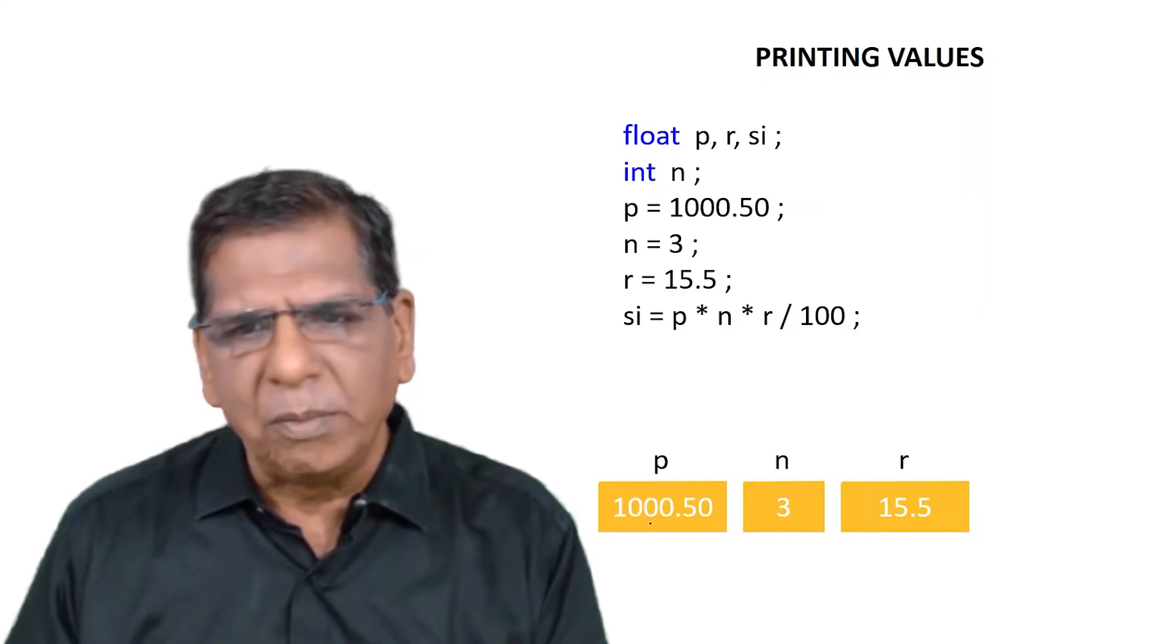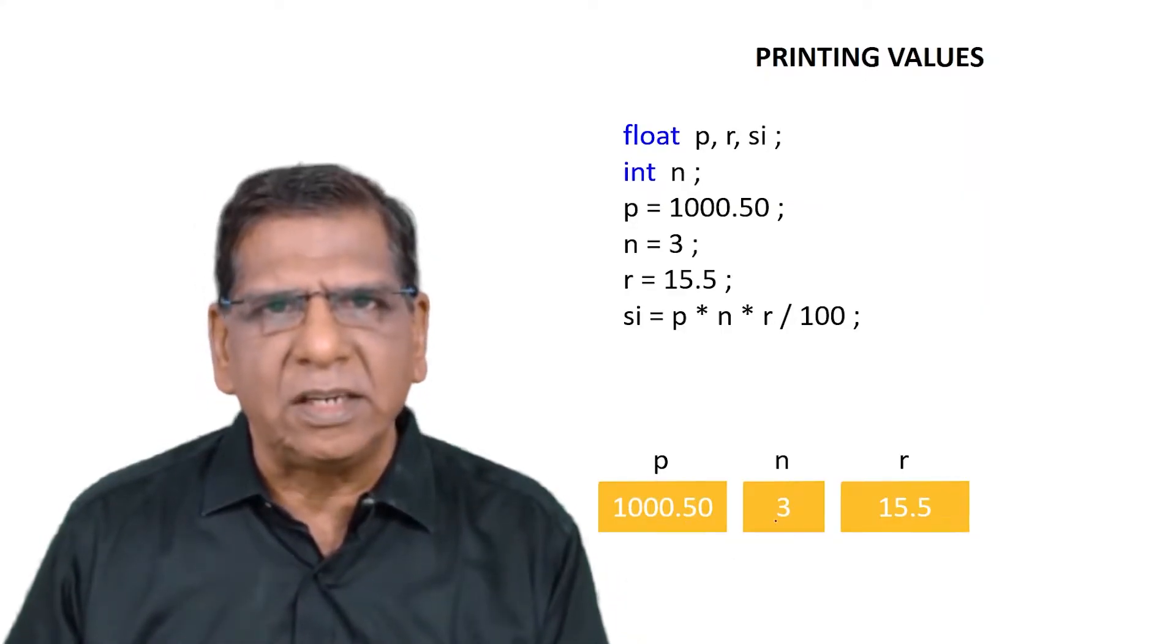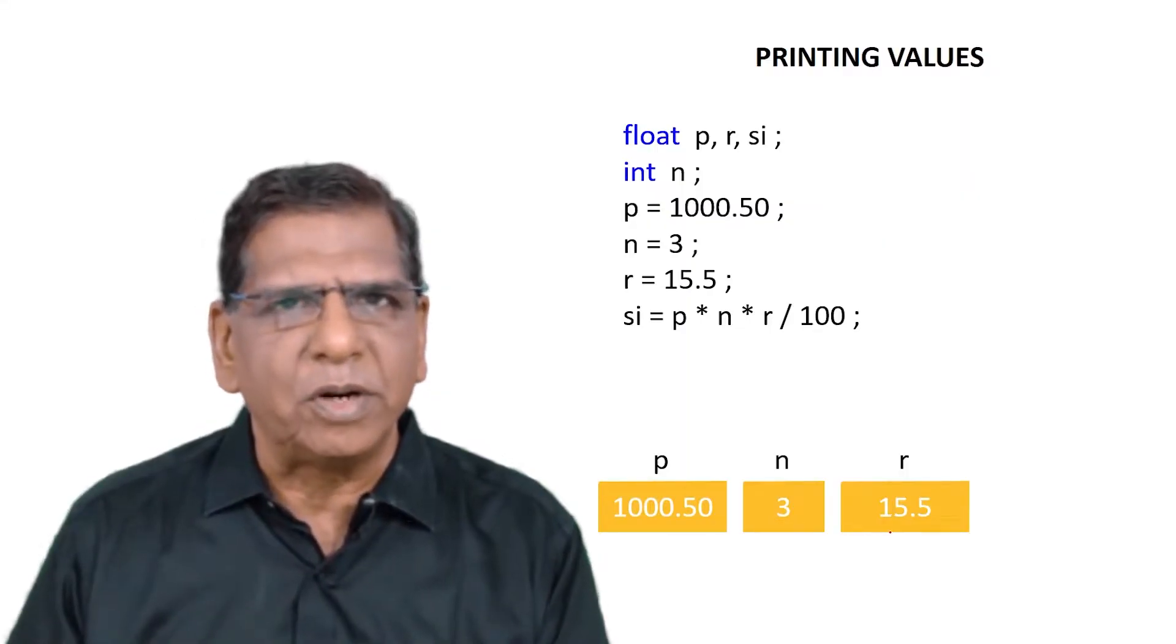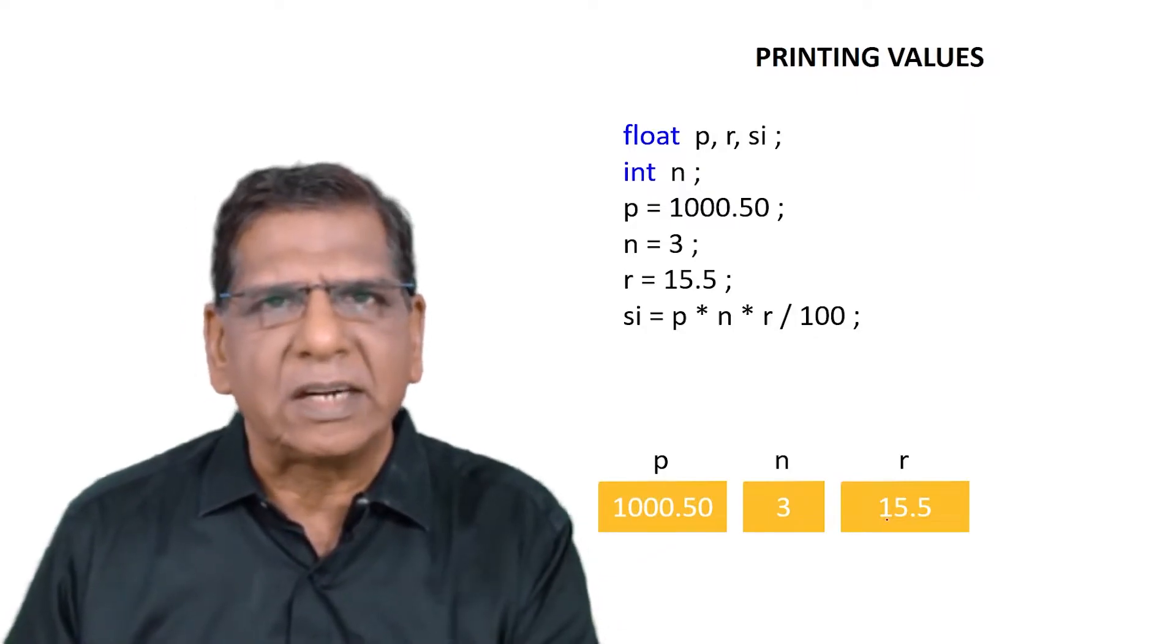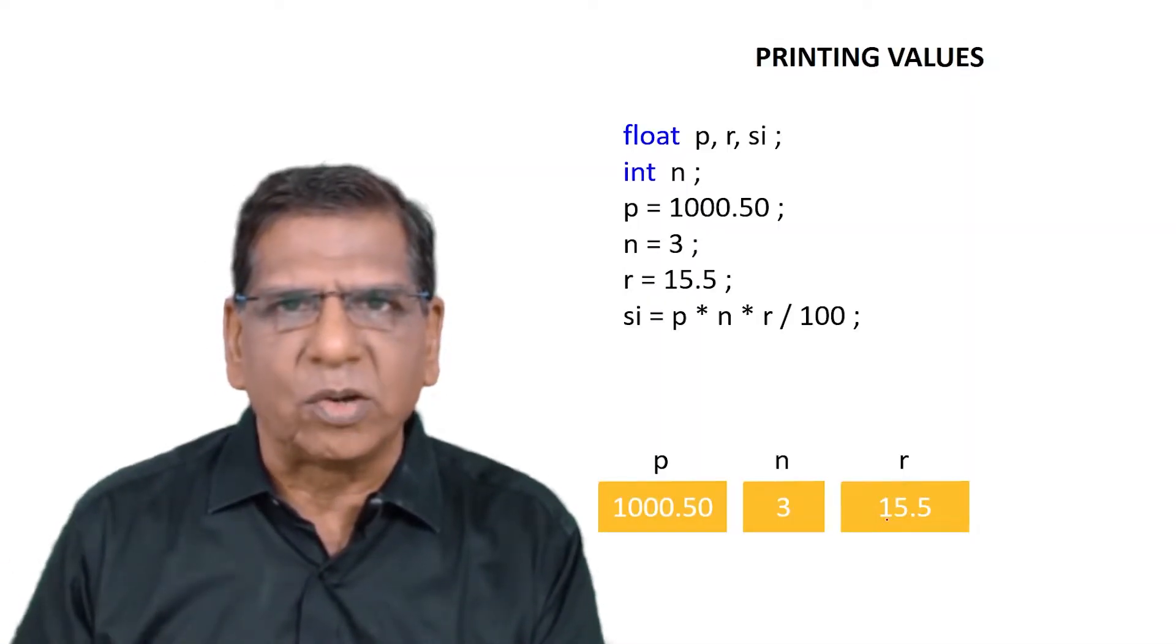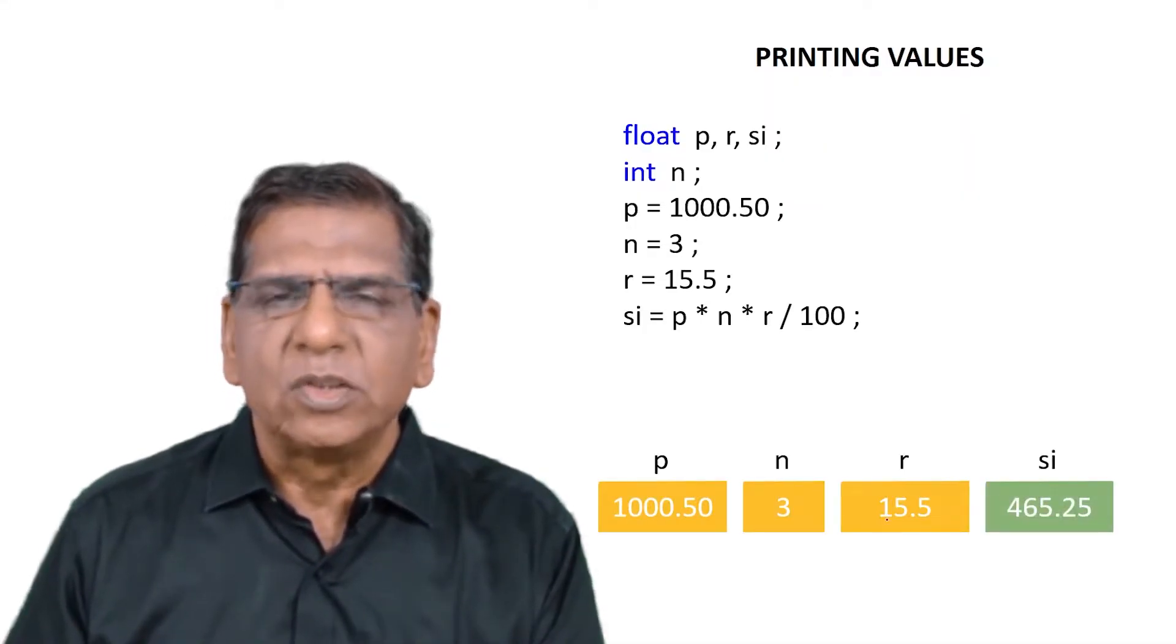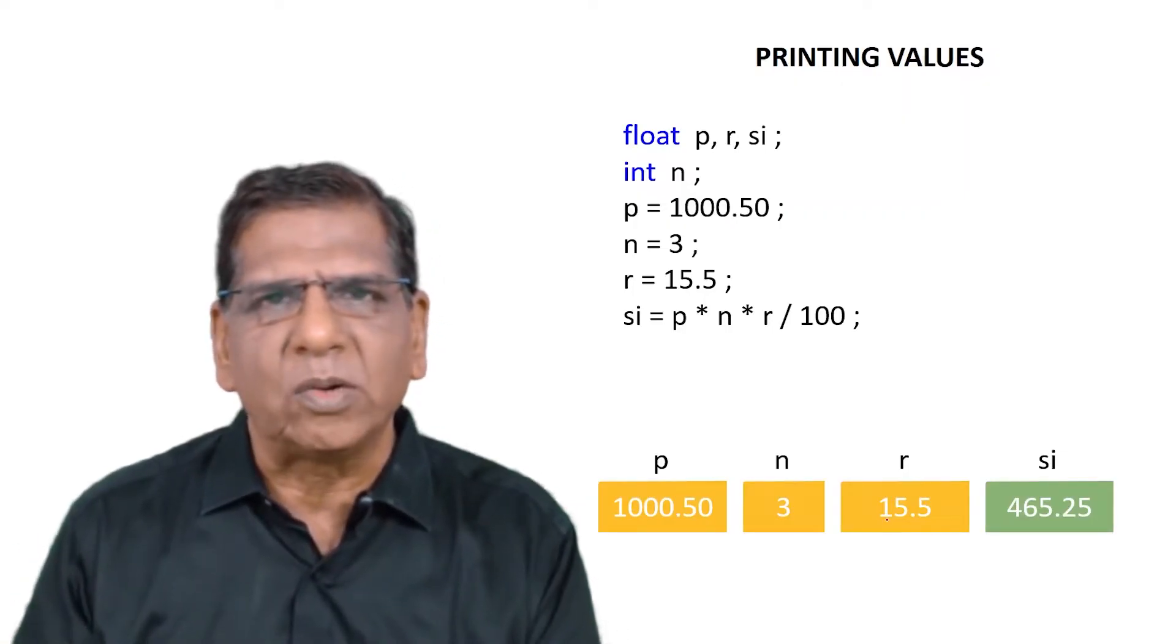Whatever result you get out of these multiplications, that is finally divided by 100. Value that you obtain out of this will be stored in yet another location. Maybe P into N into R slash 100 does turn out to be 465.25. So that is stored in yet another location and the name SI is given to that location.